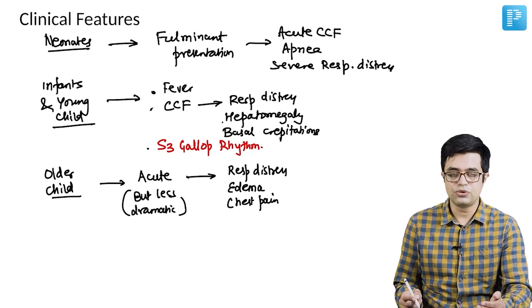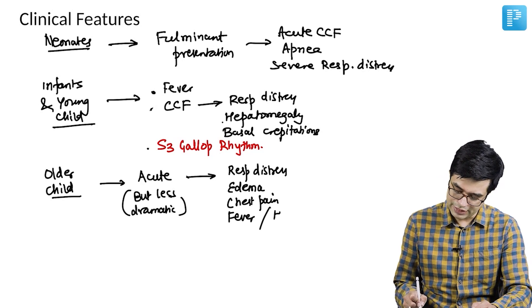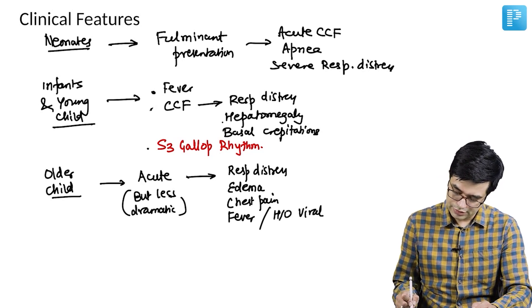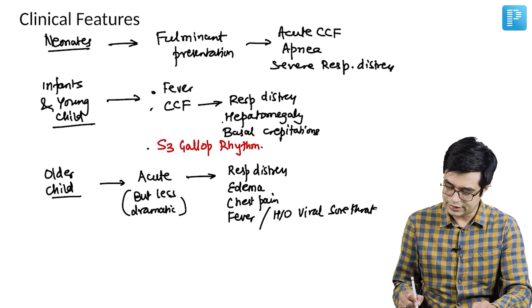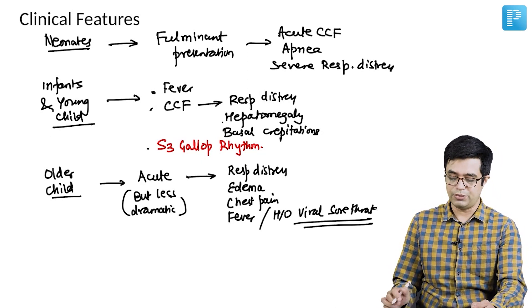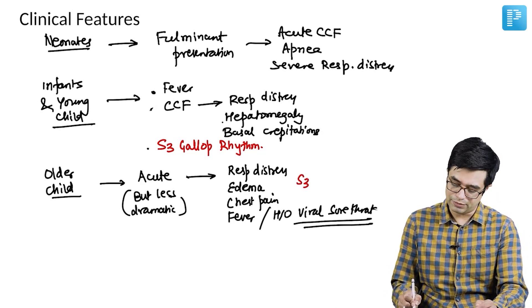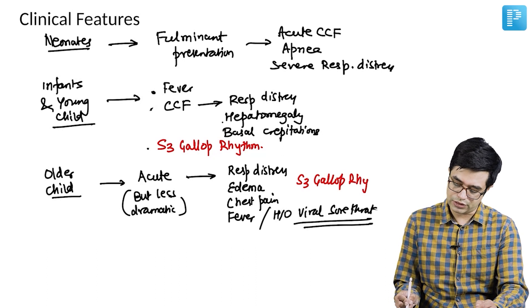If it is due to viral infections, fever may be present, or there may be a history of viral sore throat or a viral skin infection in the recent time before the onset of symptoms begins. S3 gallop rhythm will also be present in this group of individuals.